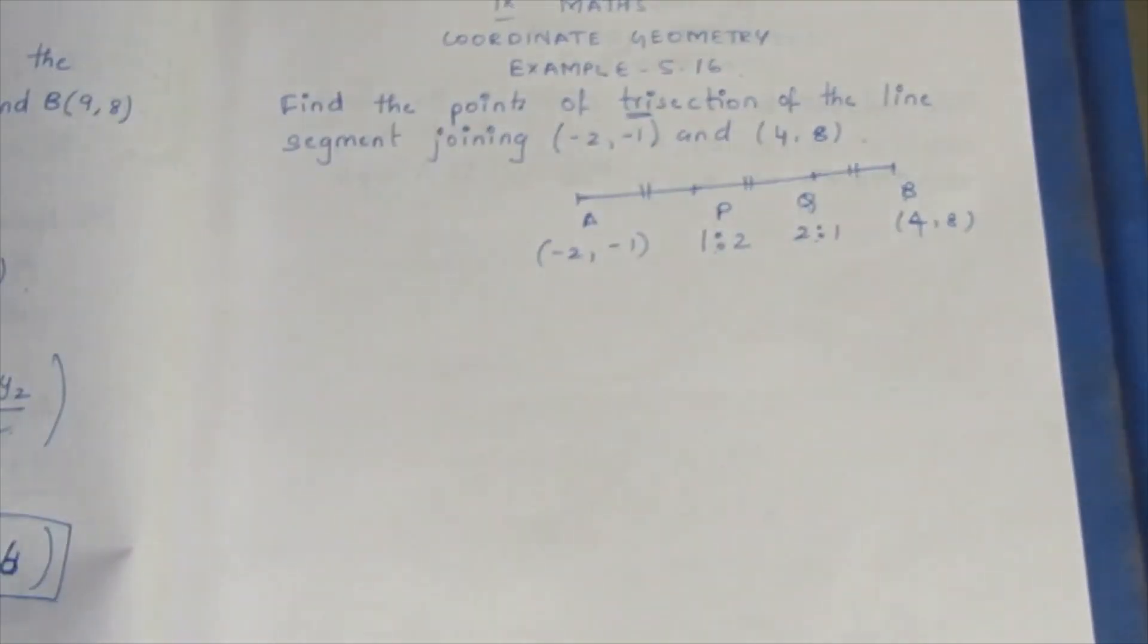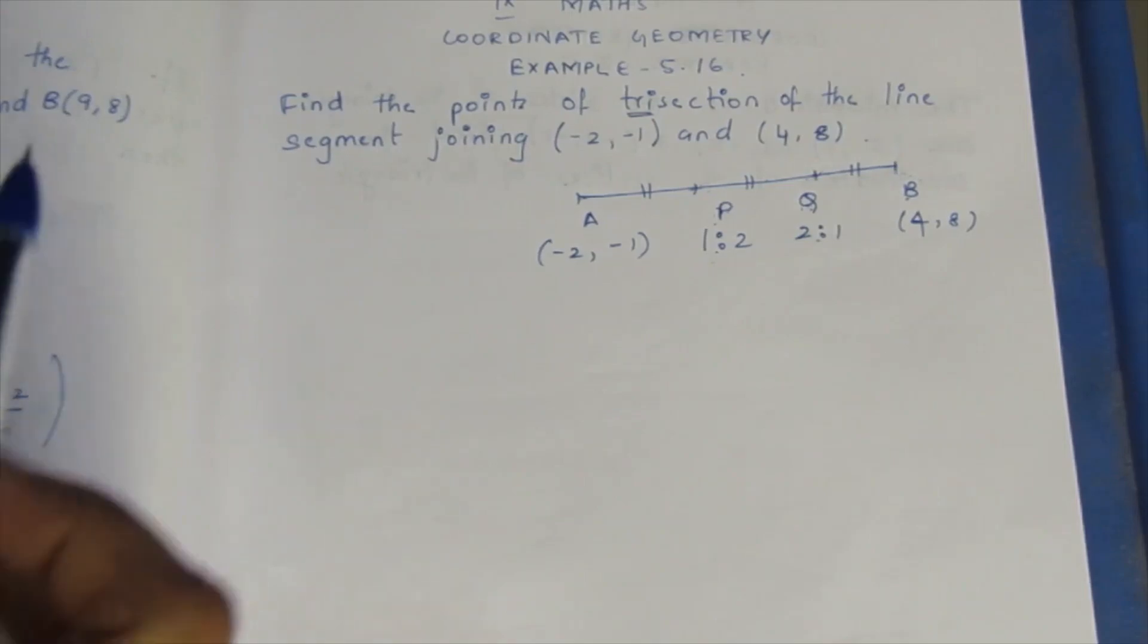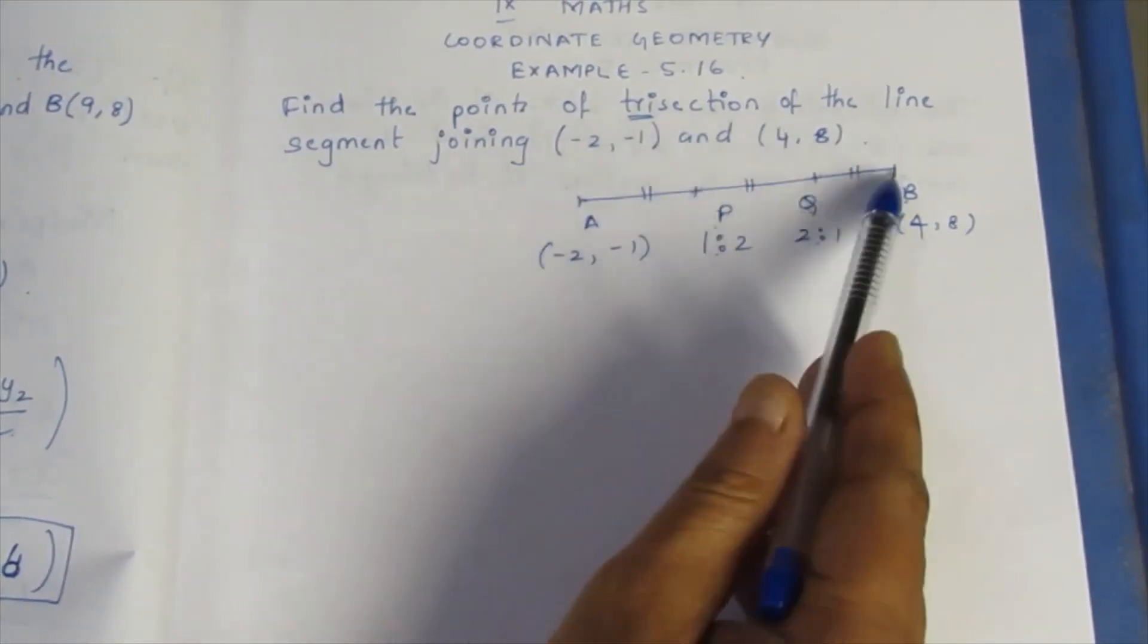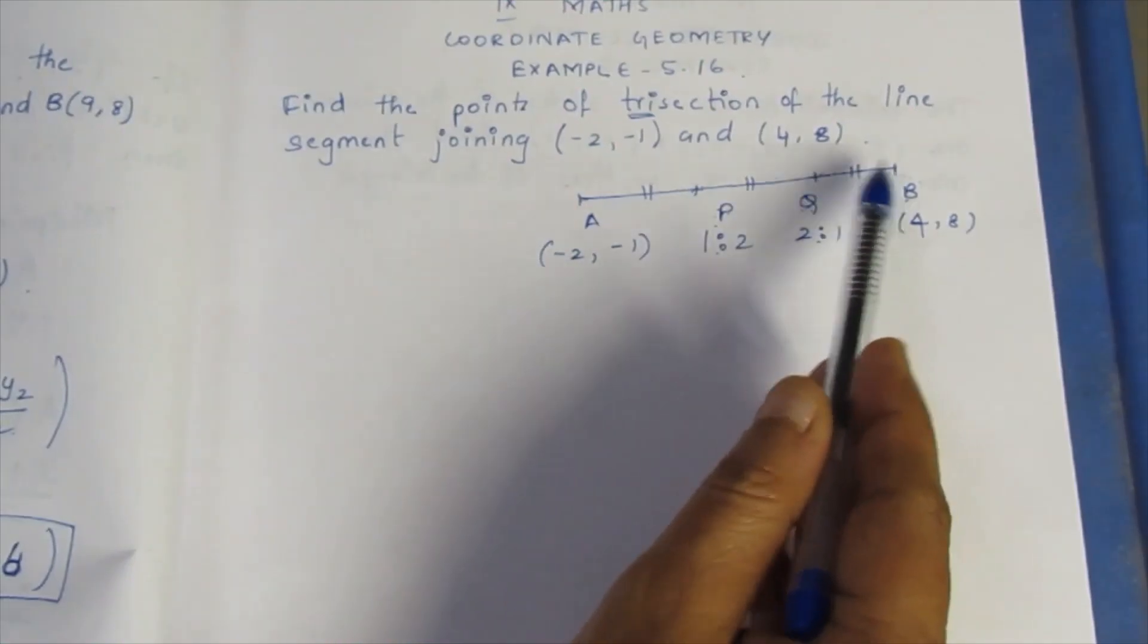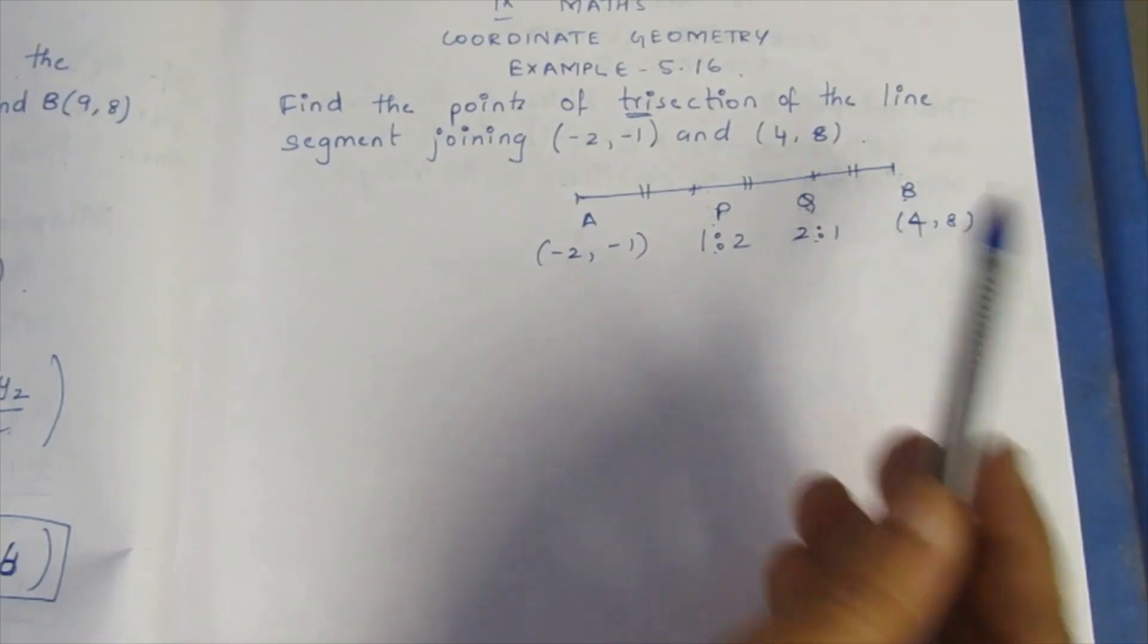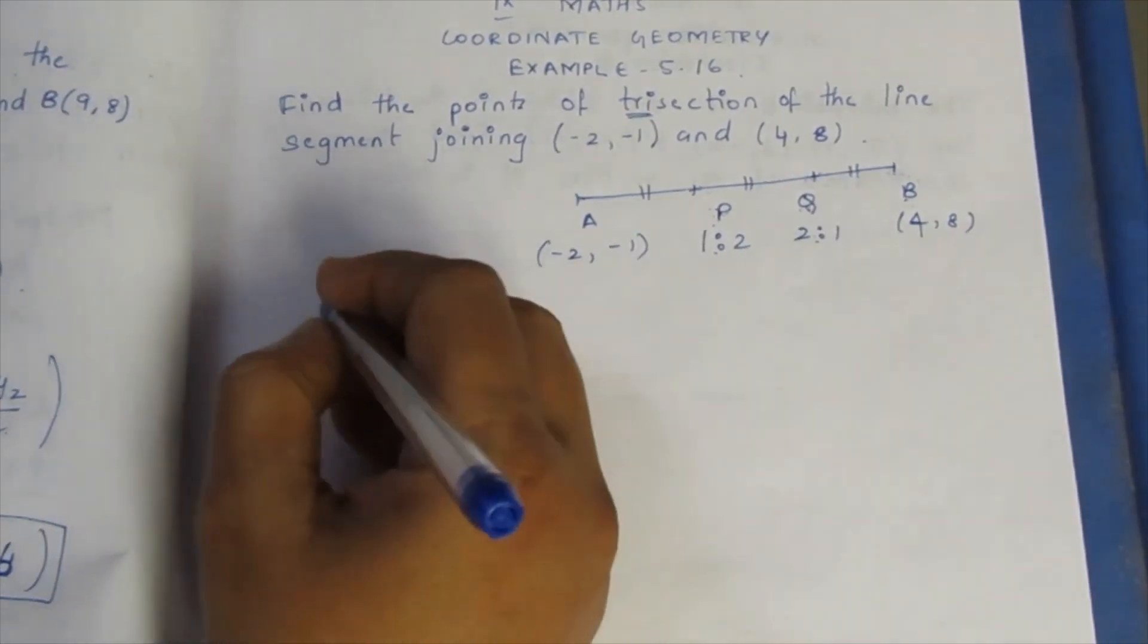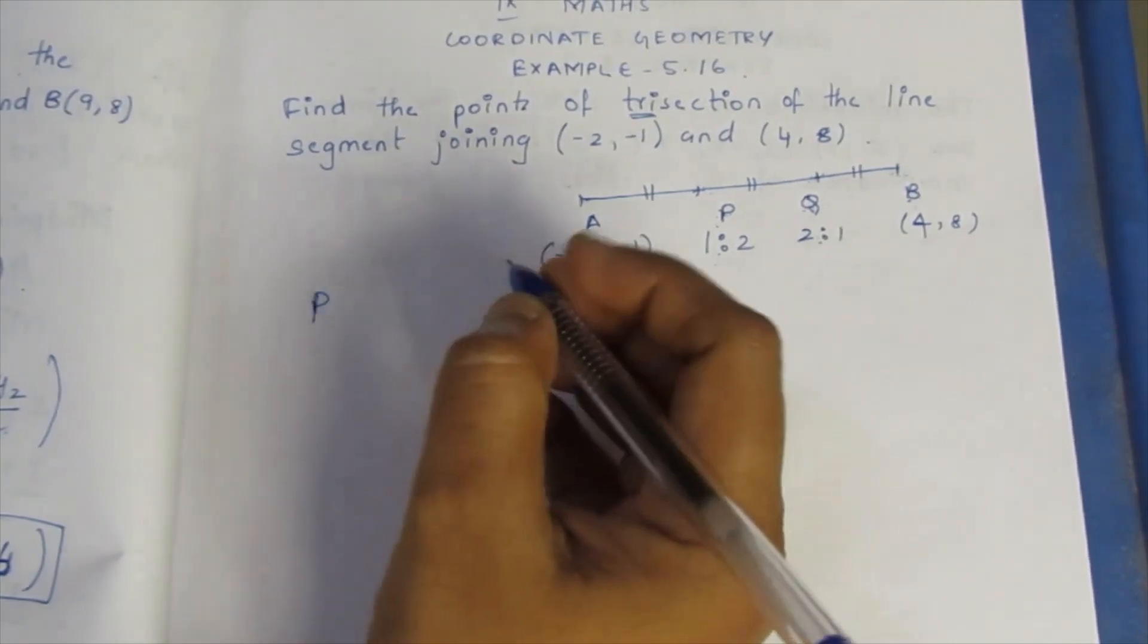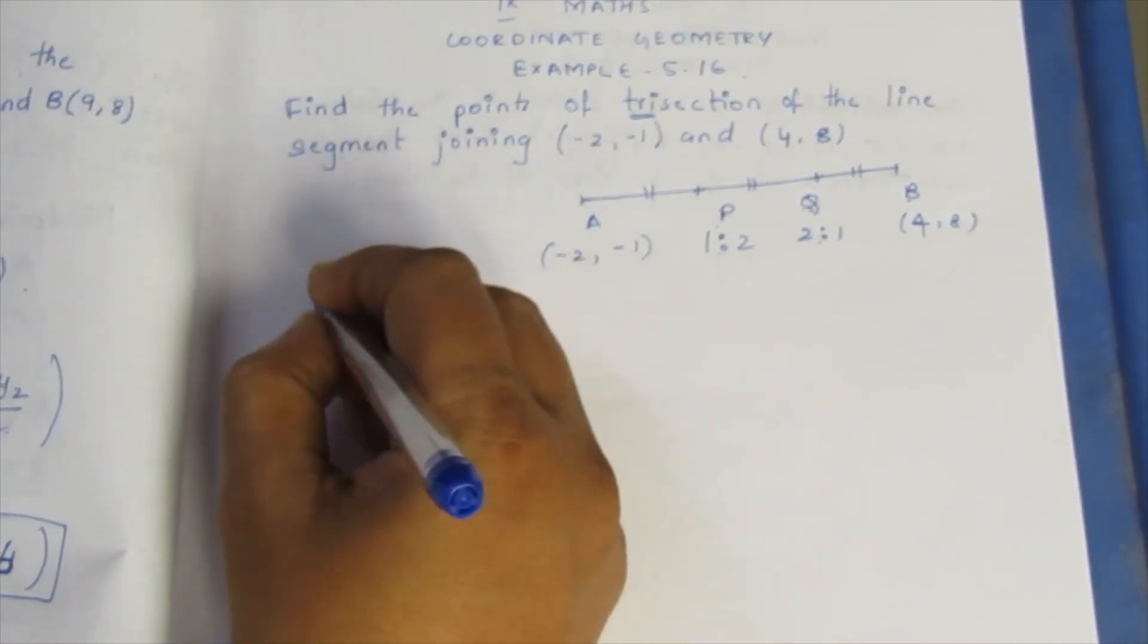So if we want to find point P, we consider A and B at the ratio. A and B are in two parts and one part. But P and B can use midpoint. So if we want to find the point...